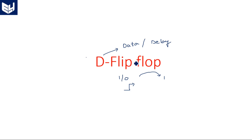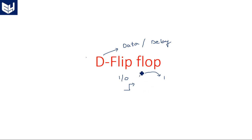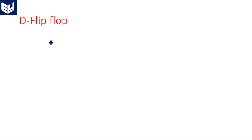D flip-flops are also known as delay flip-flops. Delay flip-flop means the gap between the application of input and the occurrence of output is exactly one clock pulse delay. That's why this is also known as a delay flip-flop.